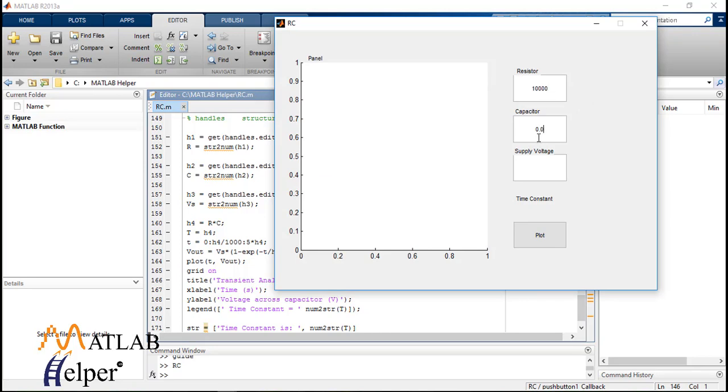Let's say resistor is 10K, capacitor is 6uF and supply voltage is 12V.